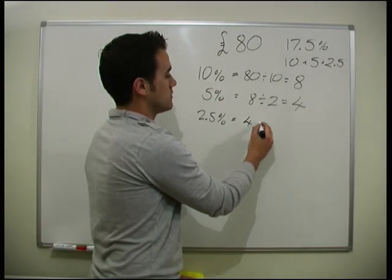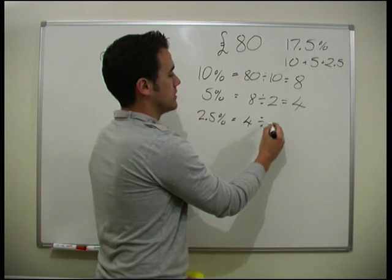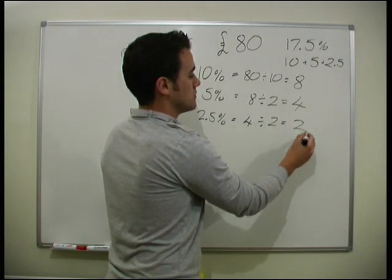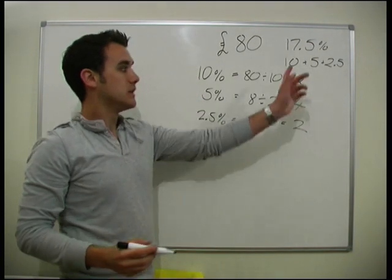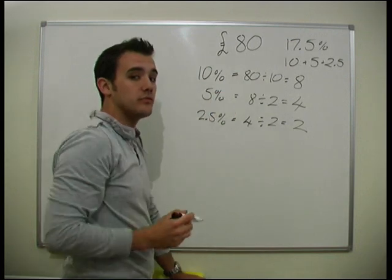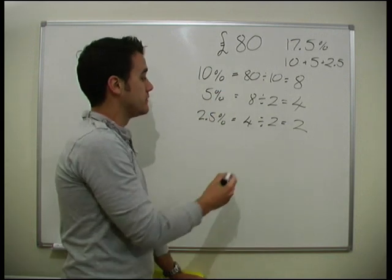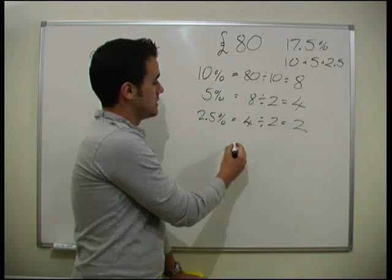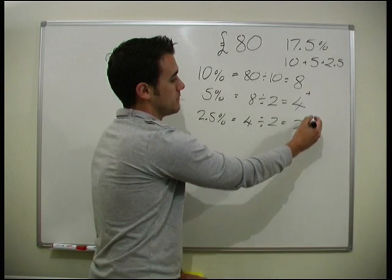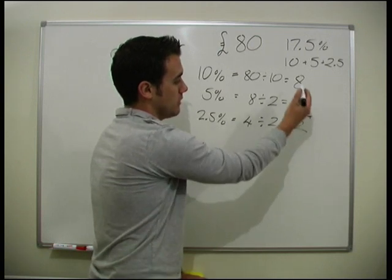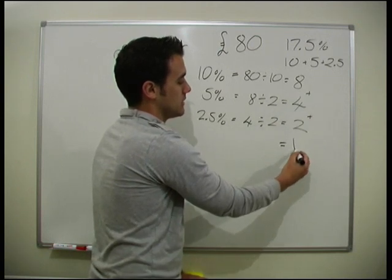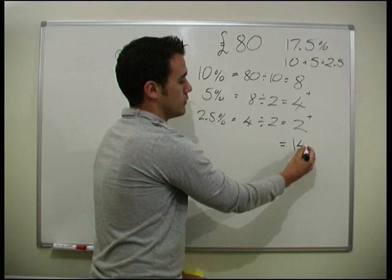5% equals 4. And 2.5% is just half of that, which is 2. So we just need to add these up: 10% + 5% + 2.5% is 17.5%, so we add them all together and find that the total VAT is £14.